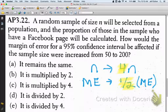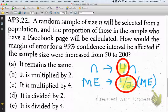So, it's not enough just to take a couple more people in your sample if you want to reduce your margin of error. You'd have to quadruple your sample size just to halve your margin of error.